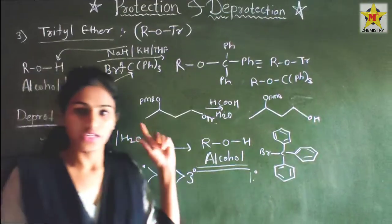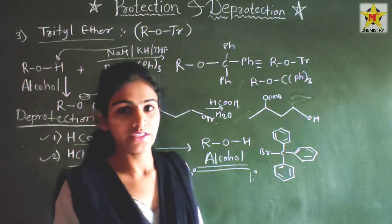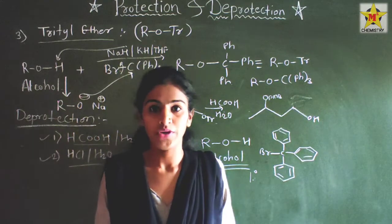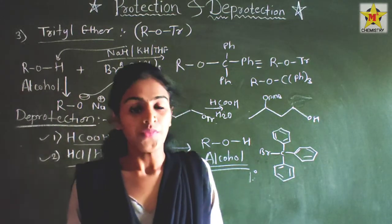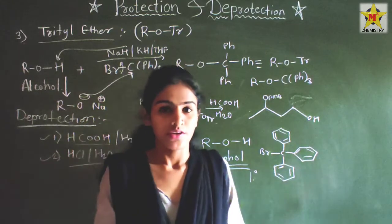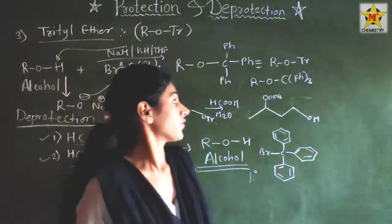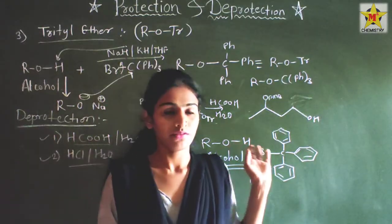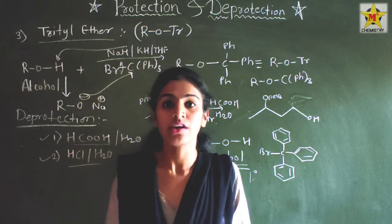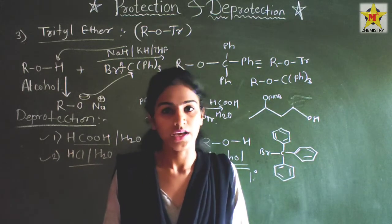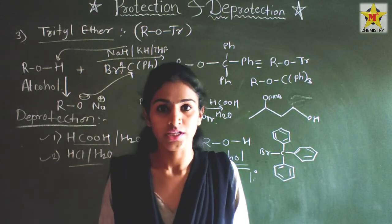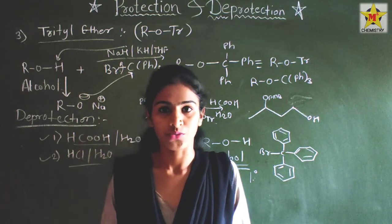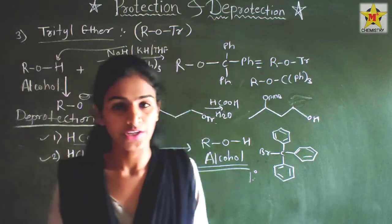We discussed three protecting groups: first is benzyl ether, second is PMB or MPM, and third is trityl. If you have any queries, ask in the comment box, and see our next lecture for the next protecting group. Thank you so much for watching.